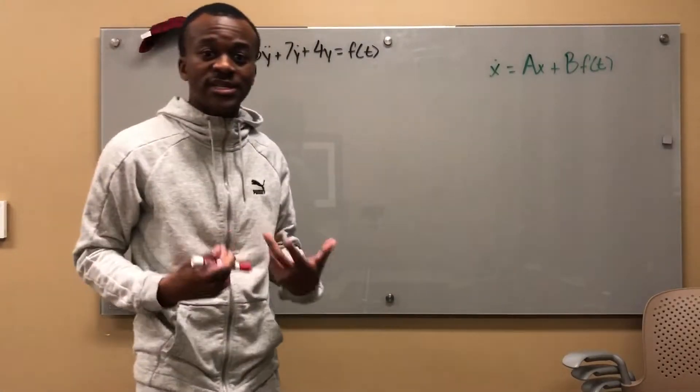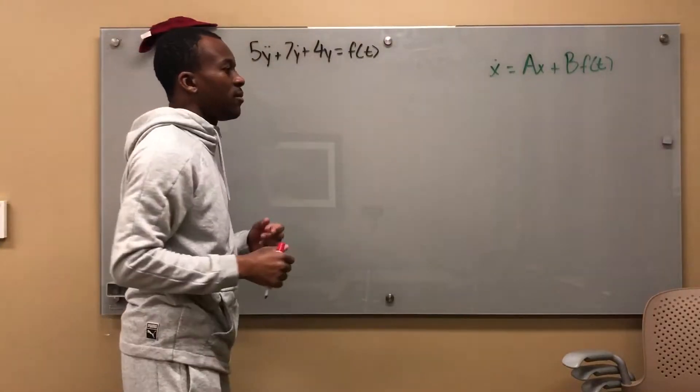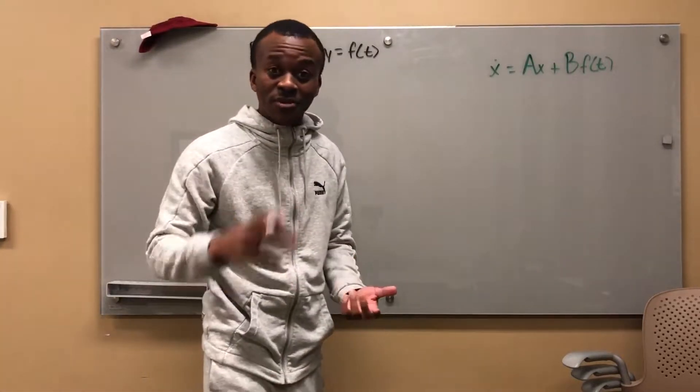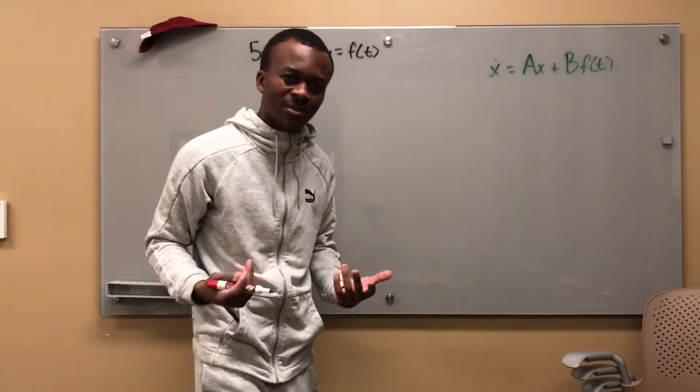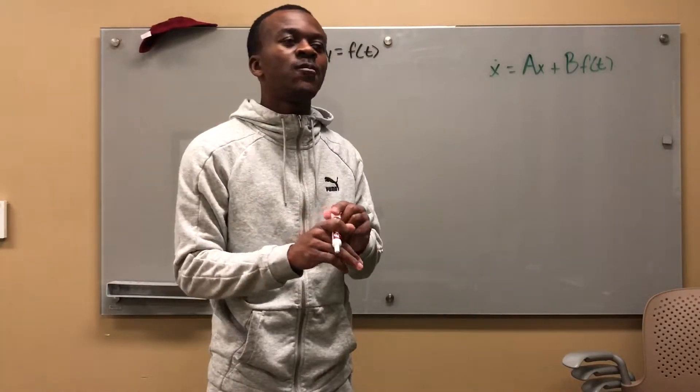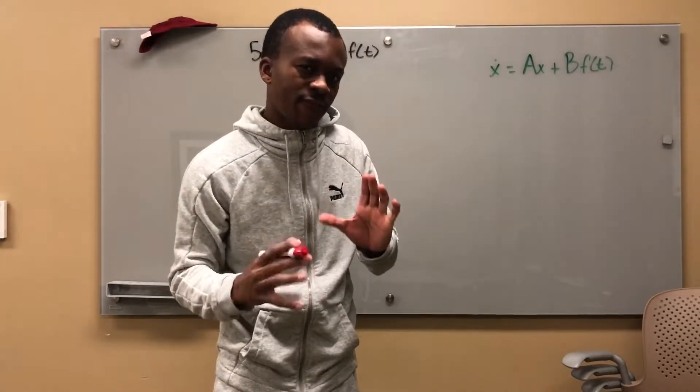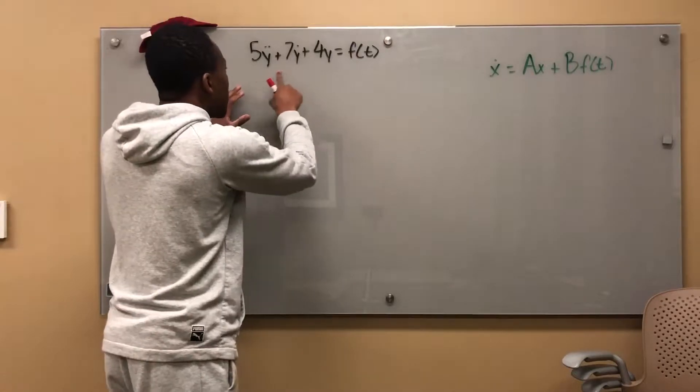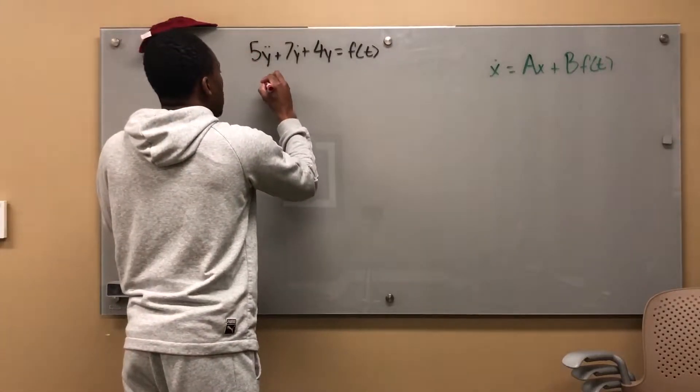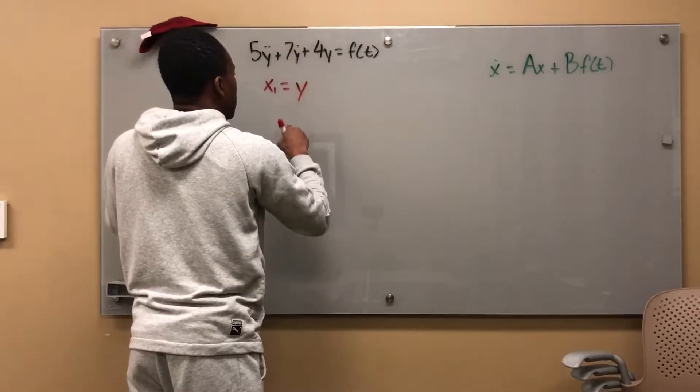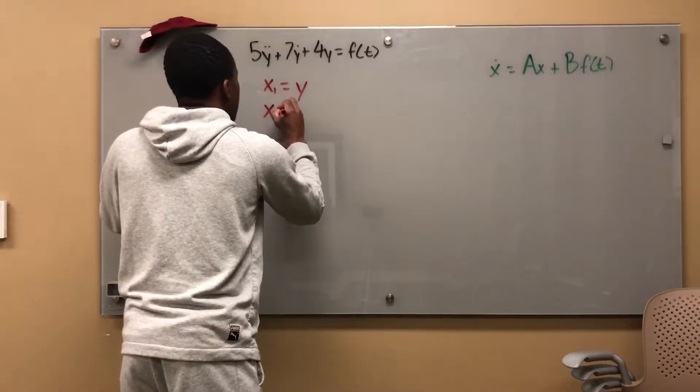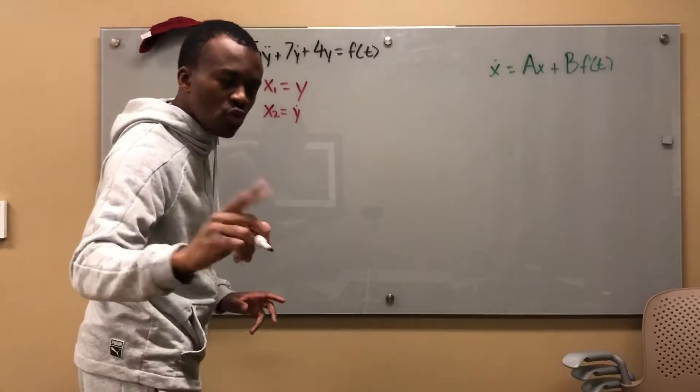So what I want you to first do when it says put it in state variable form is get everything to be a first-order differential equation. What I mean by that is I'm trying to find something to define all of these variables with. So I'm going to say x_1 is y. And that being said, x_1 dot would be y dot. So I'm going to say that x_2 is y dot.